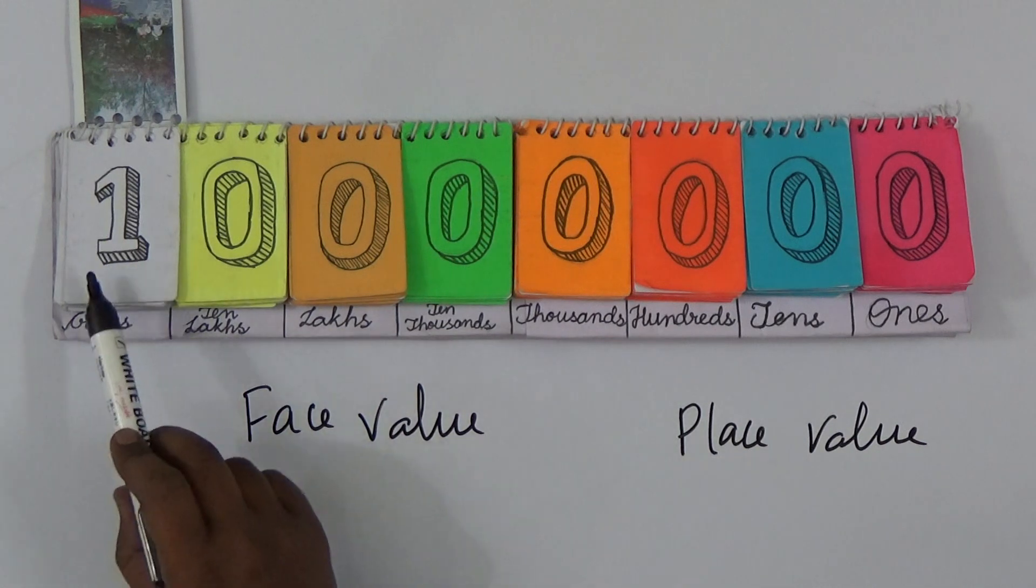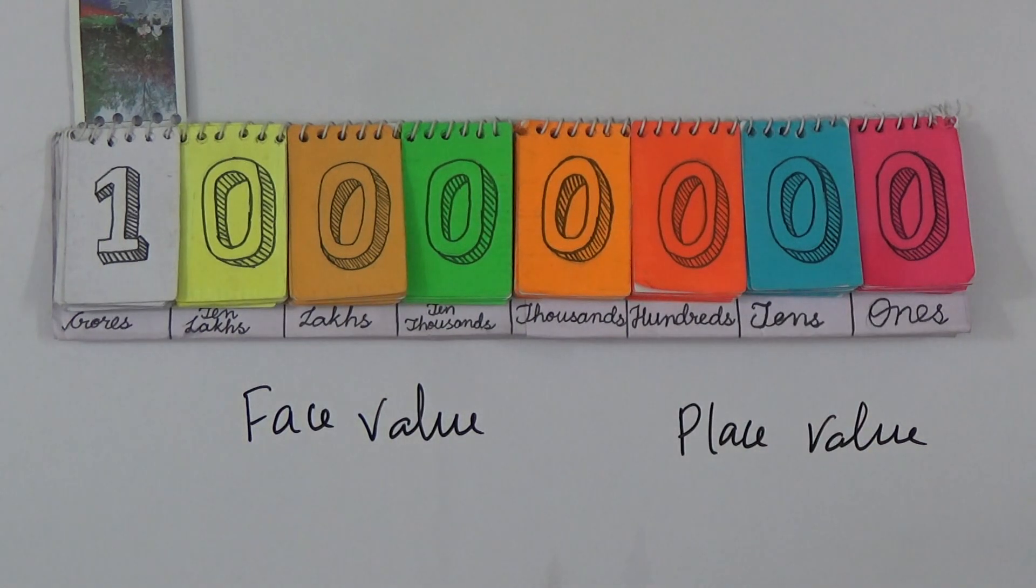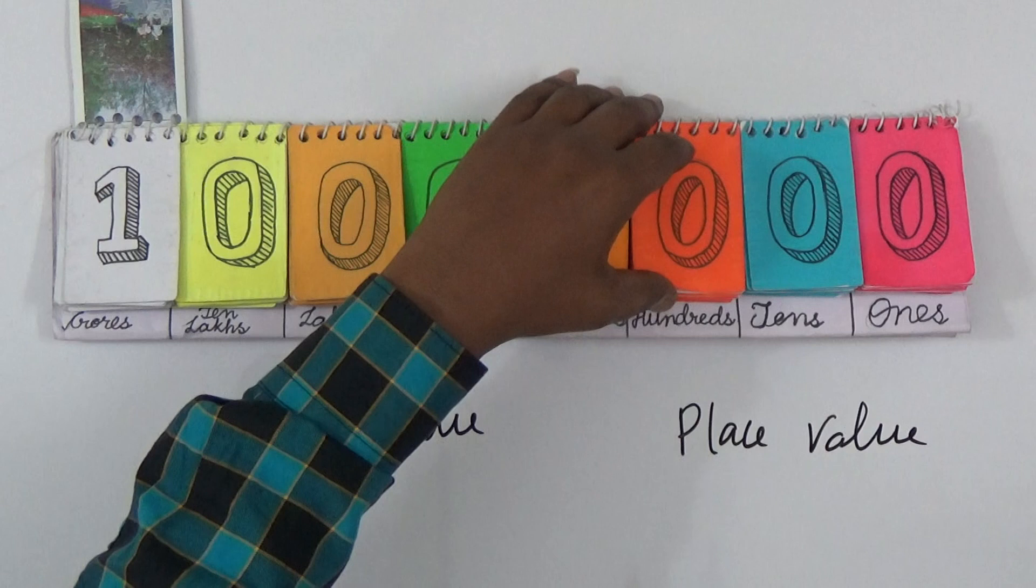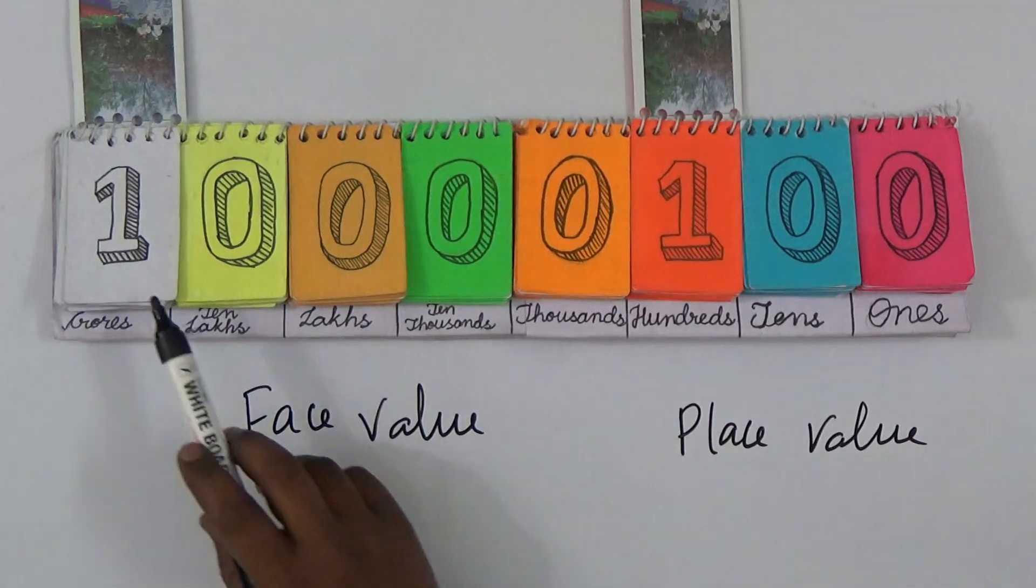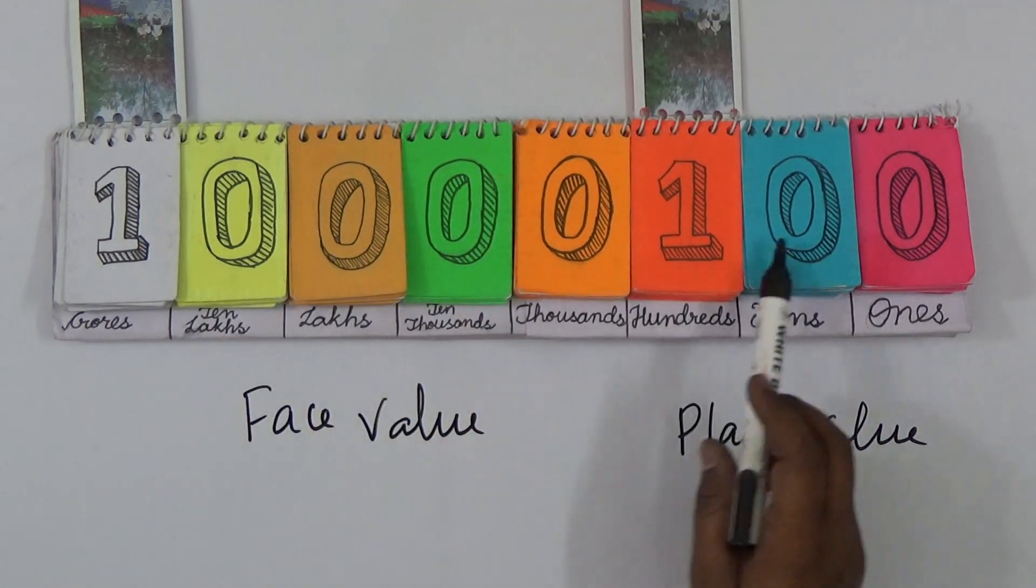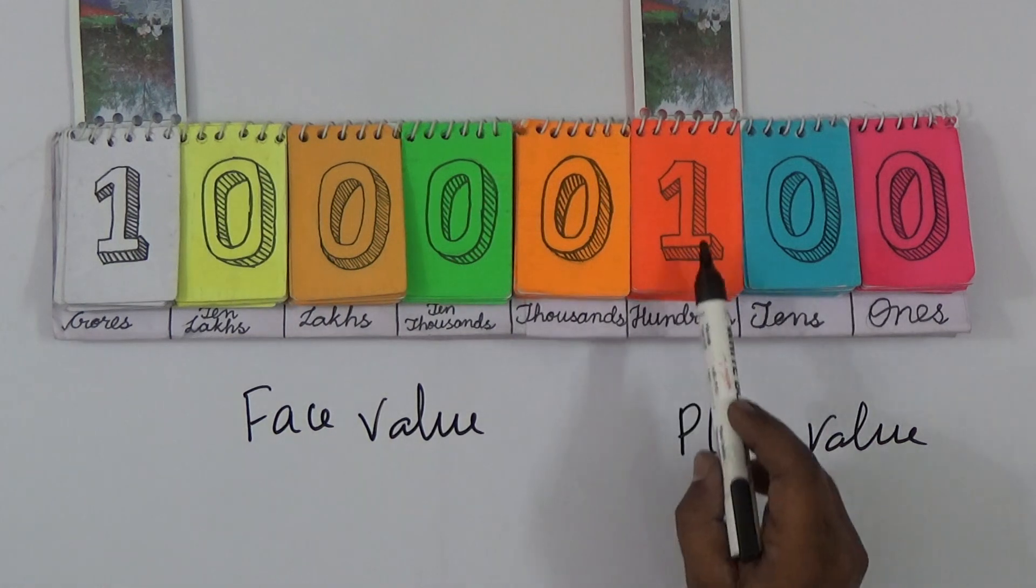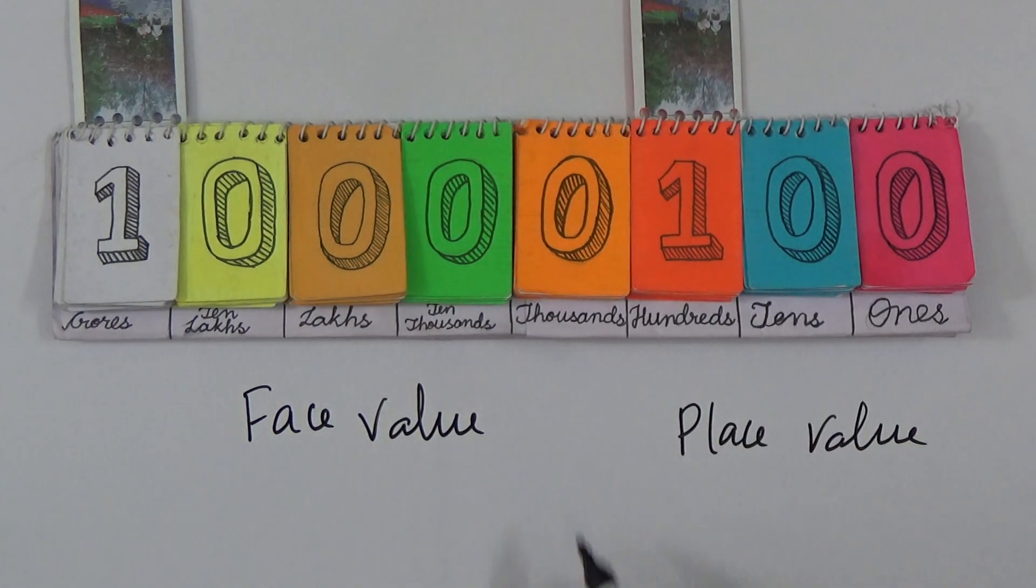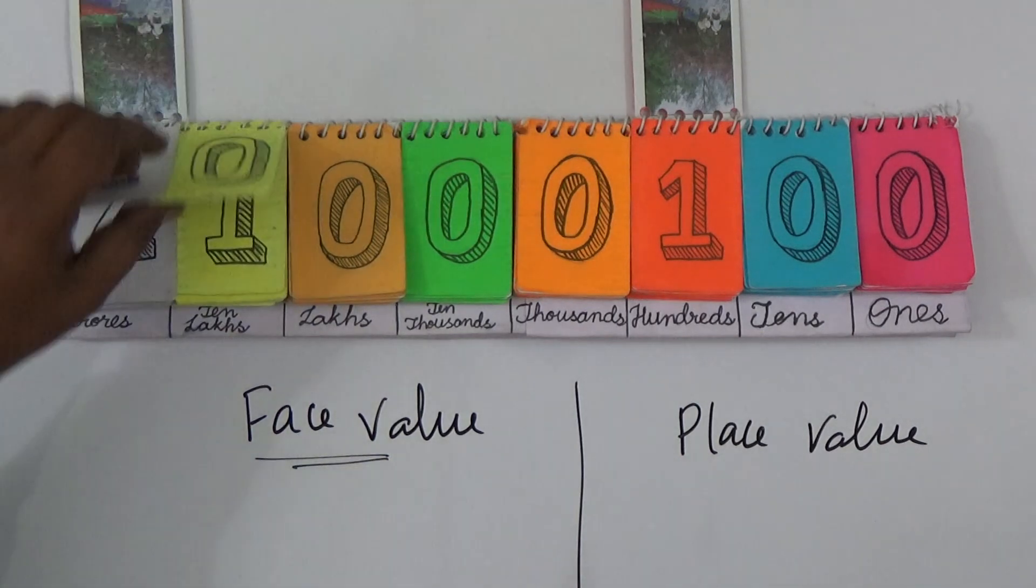This complete number is one crore. If you take this number, this is 1,00,00,100 - that is one crore and one hundred. Before that, you see face value is nothing but the number value itself. For example, I'm taking one number.